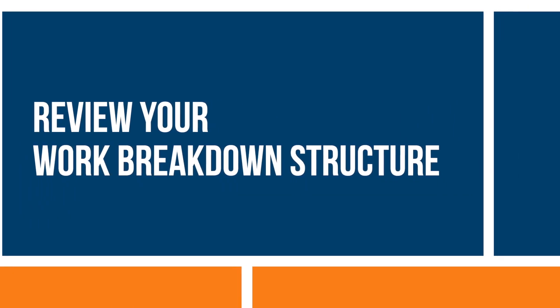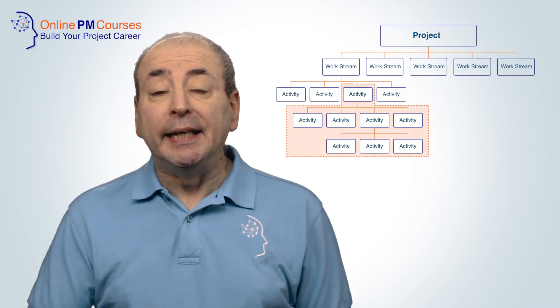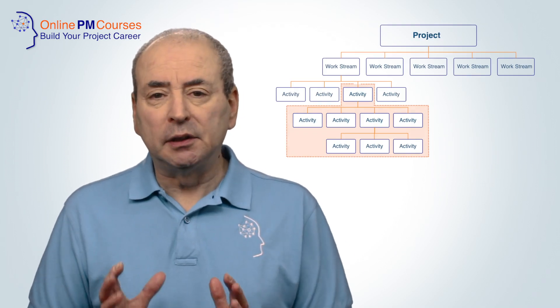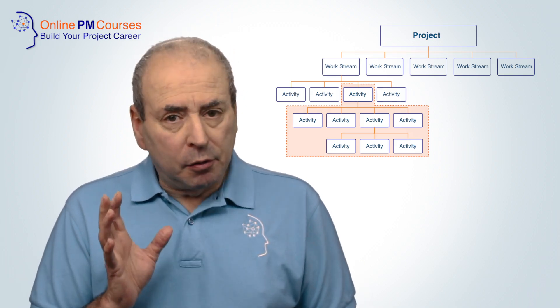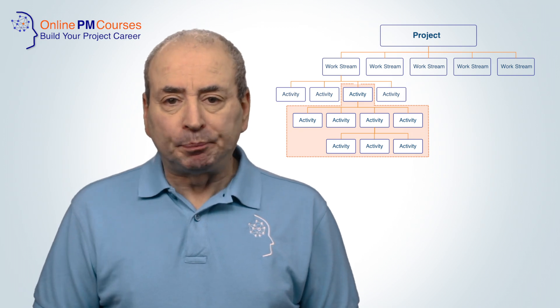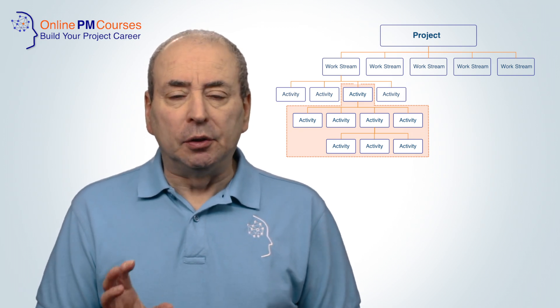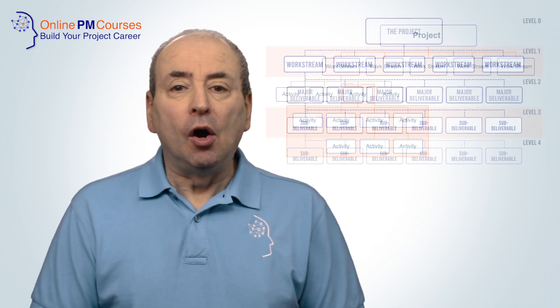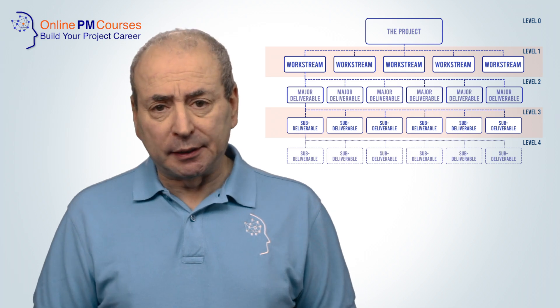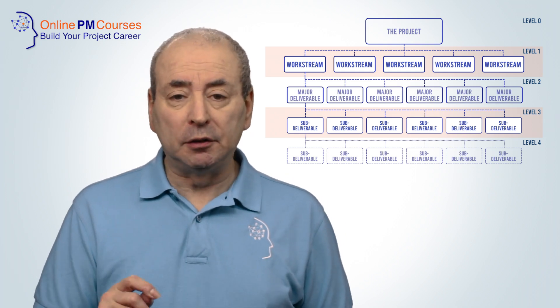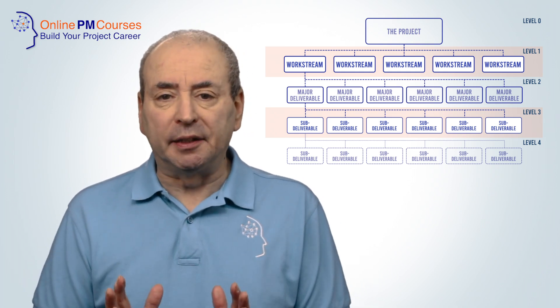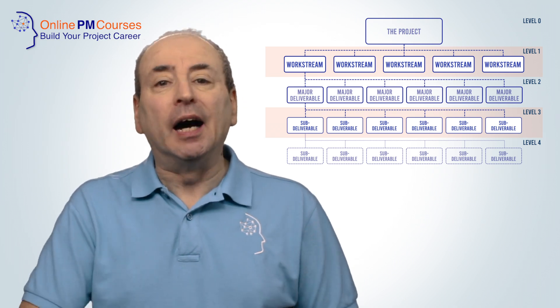Step one: review your work breakdown structure. First, ensure that it breaks the work all the way down into individual tasks. Review each work package within the work breakdown structure and look to see that it breaks the work down into small enough activities or tasks to create your network diagram. Each task needs to contribute to the production of a deliverable or a product, or to be a facilitator in that process. Critically, each task needs to be something that the person or people doing the task will recognise as a single thing that they completely understand.